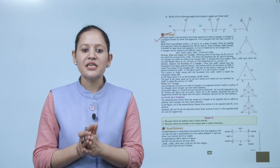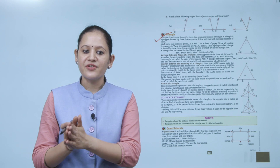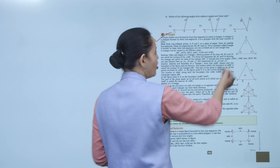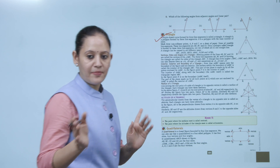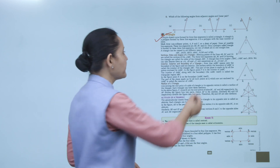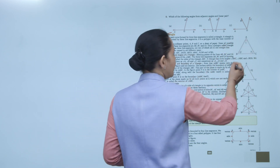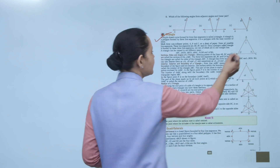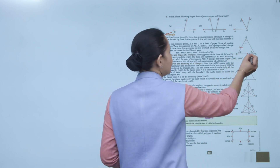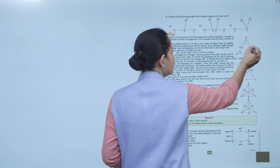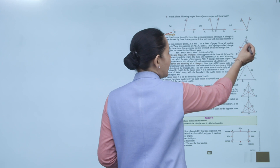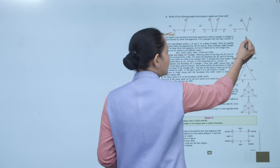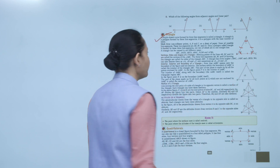A triangle can be named in six different ways. It has three sides: AB, BC, and CA; three angles: ∠1, ∠2, and ∠3; and three vertices: A, B, and C. We can name the triangle as △ABC, △ACB, △BAC, △BCA, △CAB, or △CBA.